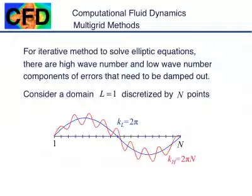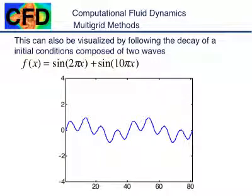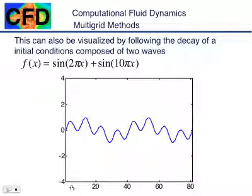We have a little bit of a contradiction or paradox here. There was supposed to be a movie — I apologize, I forgot to check that it worked. But basically what you see in the movie is that this high-frequency wave disappears almost immediately, while the long-amplitude wave — this is actually two waves of equal amplitude — takes forever to die out.